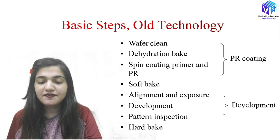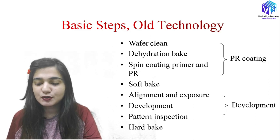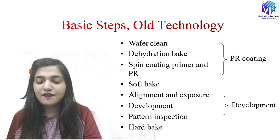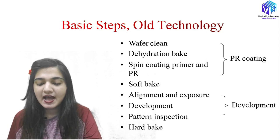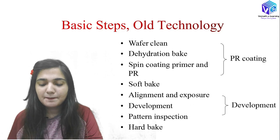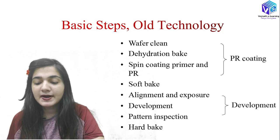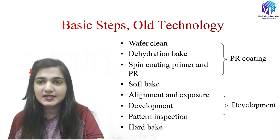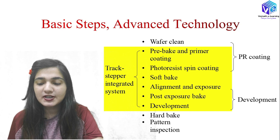If I classify the steps present in the old technology, we have photoresist coating and development. In the photoresist coating we have wafer cleaning, dehydration bake, spin coating primer and the photoresist, then soft bake. In the development phase, we have alignment and exposure, development and pattern inspection, then hard bake. In the old technology, alignment and exposure comes within the development phase, but in the advanced technology we have a separate alignment and exposure step.